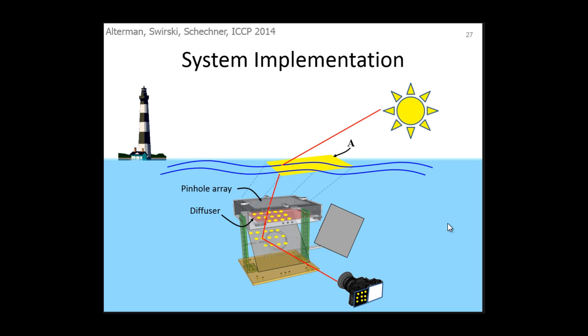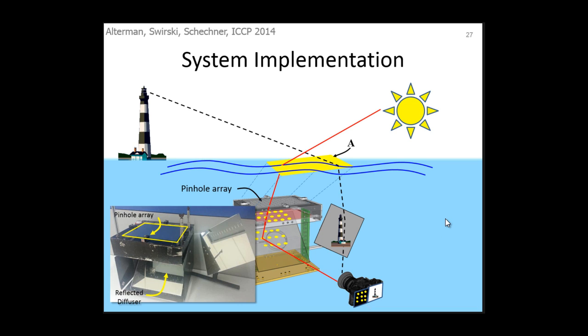Now recall that the image of an airborne scene should be acquired simultaneously with the sunlight field. For synchronization, we use the same camera and another mirror. The object is imaged through the mirror reflection. A single image contains both the sunlight field and a distorted airborne scene. Here is a photo of the actual system.